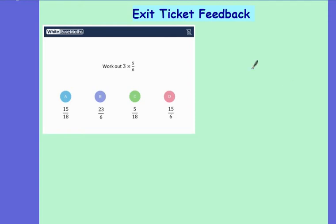Hi there Year 7. Here's a quick step-by-step guide to last lesson's exit ticket. The first question I asked you was to work out 3 times 5 over 6.